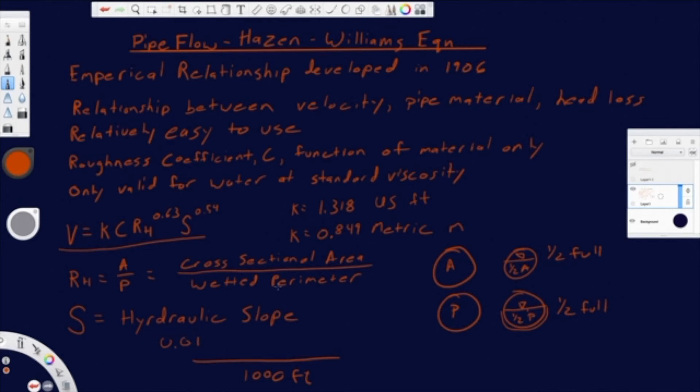Then for every foot of pipe, you are losing 0.01 foot of water column worth of pressure. So it's feet of water column per foot of pipe if you're using US or meter to meter if you're using metric.